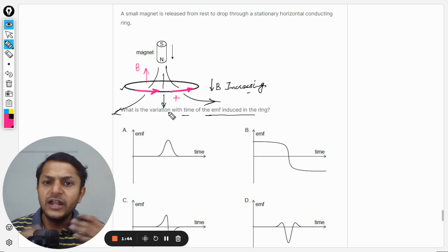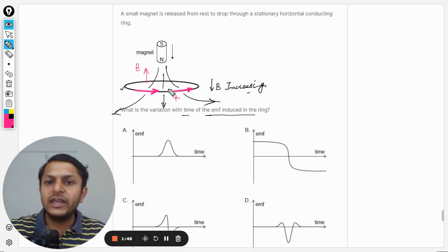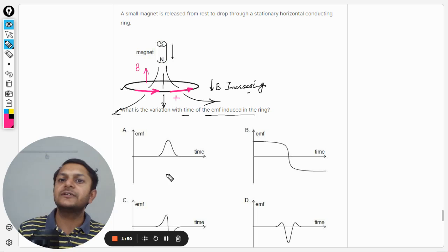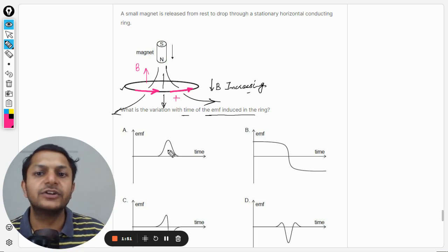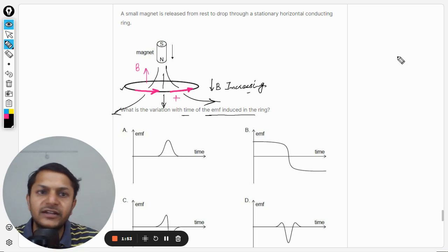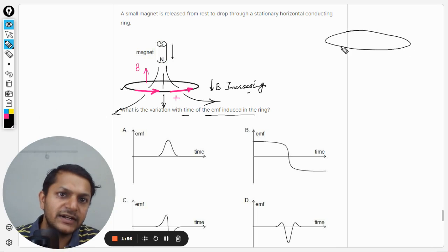Now what is happening in the next case when it is passing through? So immediately when it passes through, the game is reversed. So I have to create this diagram here. Let us say this is the ring and the magnet is now here.